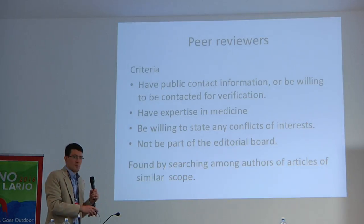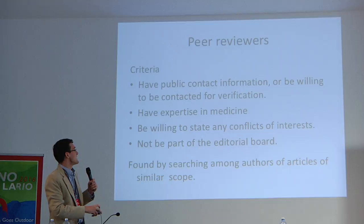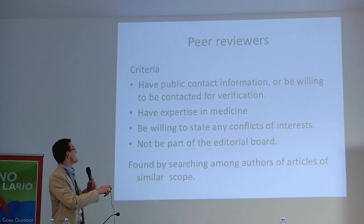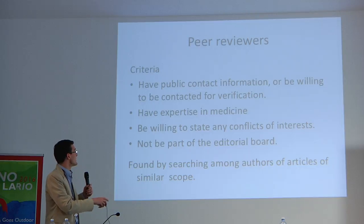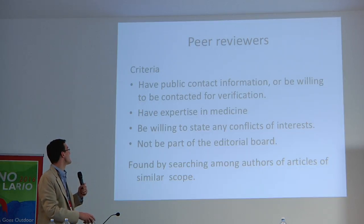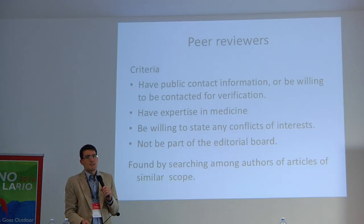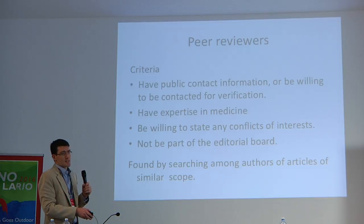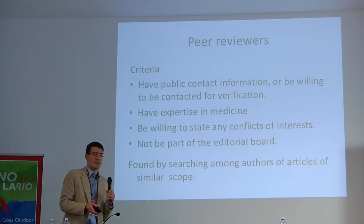The journal has certain criteria for peer reviewers. Peer reviewers should have public contact information. They may also be anonymous, but then they need to be willing to be contacted by a member of Wikimedia's volunteer response team to verify their identities. Peer reviewers should also have expertise in medicine, and the exact nature of the expertise depends on the subject of the article. If it is about a very particular subspecialty, we would expect the peer reviewers to have some knowledge of that particular field.